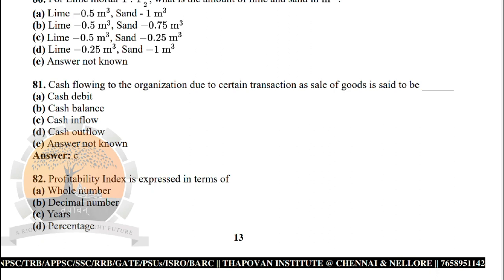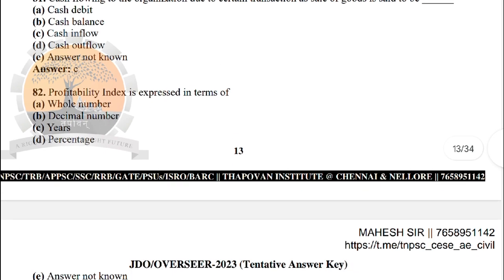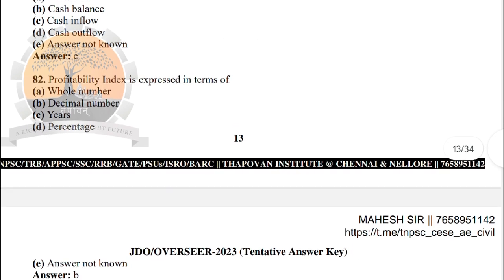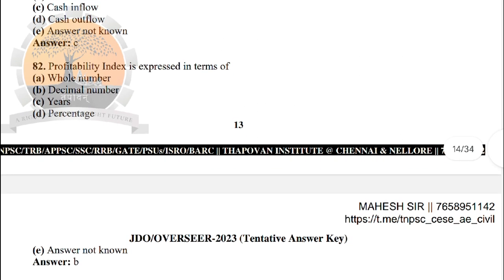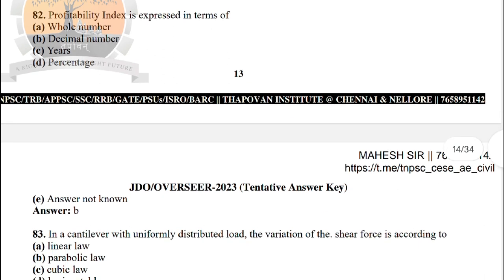Next: cash flowing into the organisation due to a certain transaction such as sale of goods is said to be — the correct answer is option C: cash inflow. Next: profitability index is expressed in terms of — the correct answer is option B: decimal numbers.